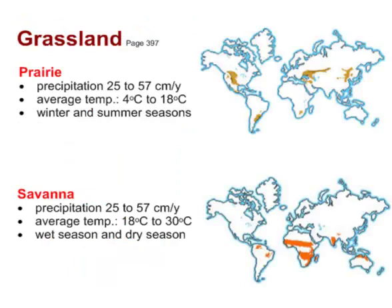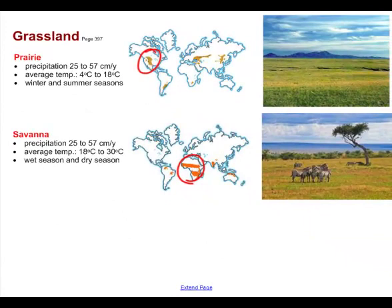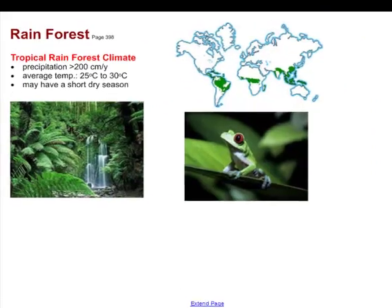Grasslands come in two types: prairie and savannah. Prairie is found in central North America — familiar to those in Alberta — while savannah is typical of Africa, home to zebras, giraffes, and lions. Both have similar precipitation of 25 to 57 centimeters per year, but the key difference is temperature: cooler regions tend to be prairie, while warmer ones become savannah.